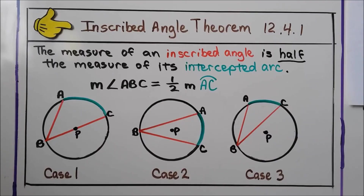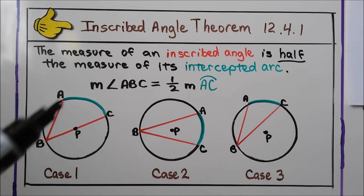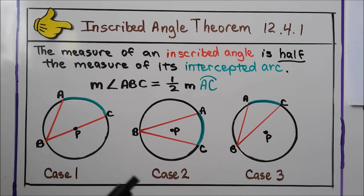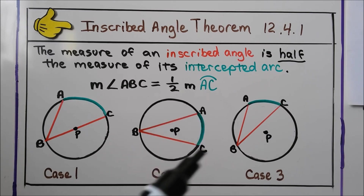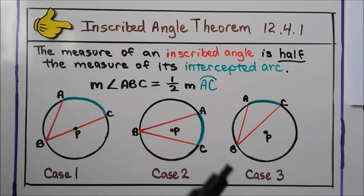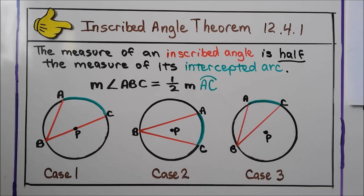For your notes: inscribed angle theorem 12.4.1 states that the measure of an inscribed angle is half the measure of its intercepted arc. So the measure of angle ABC is half the measure of arc AC. This holds for case two and case three as well — the angle is half the measure of arc AC in each case.